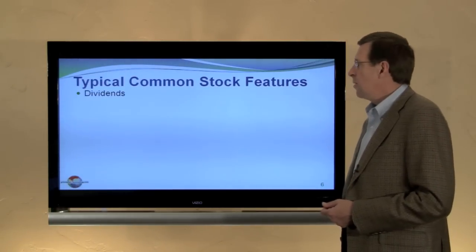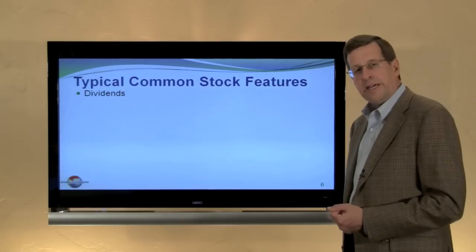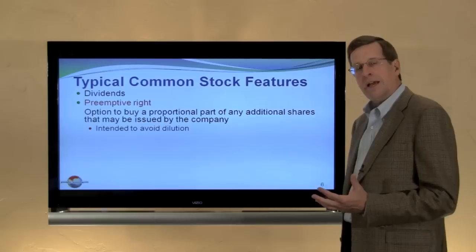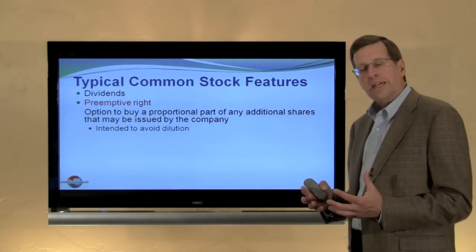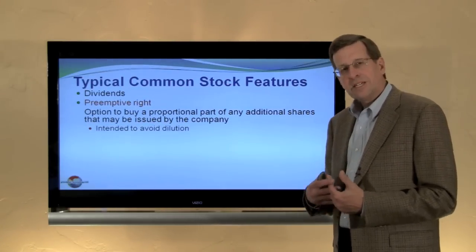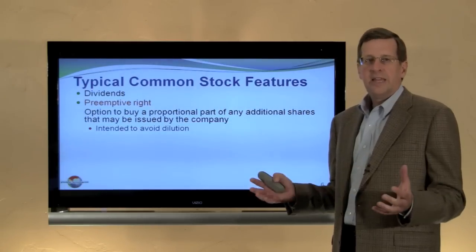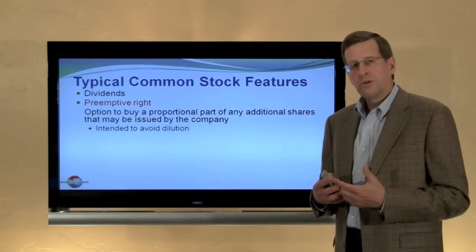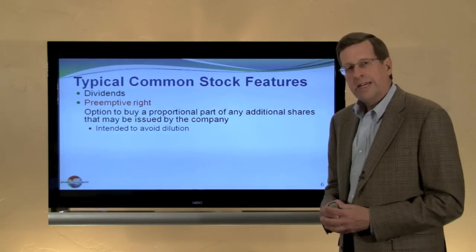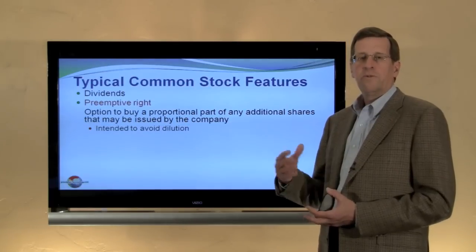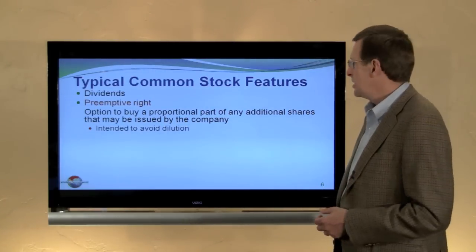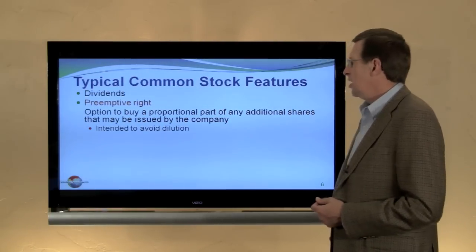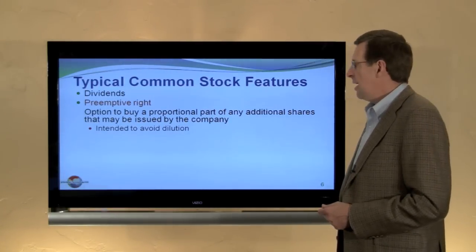Looking at common stock more closely — typical features: common sometimes pays dividends, sometimes it doesn't. Some common sometimes has preemptive rights, sometimes it doesn't. The preemptive right, typically specified in the articles of incorporation, says that if you own 10% of a company and the company wants to issue additional shares, you have a right of first refusal. You're able to maintain your 10% ownership by buying into the new share issuance before those shares are offered to other parties. It's intended to prevent a particular shareholder's interest from being diluted, though oftentimes that feature is not present.